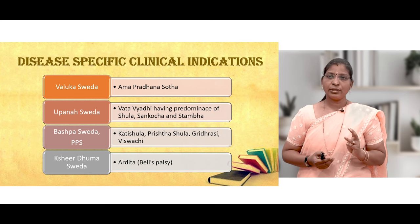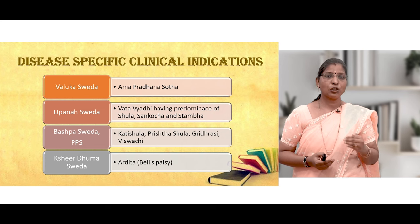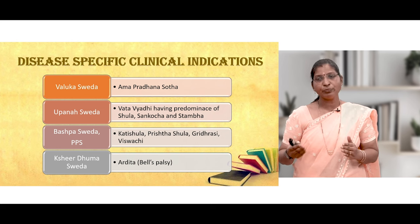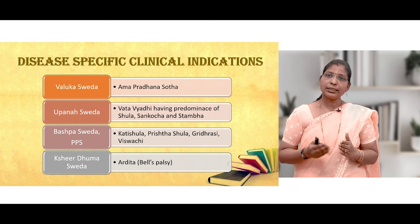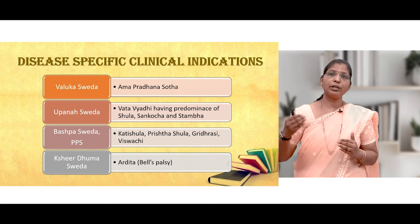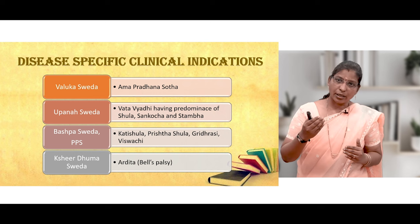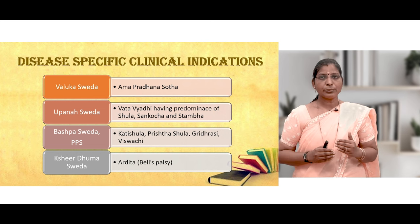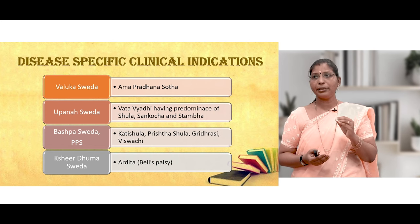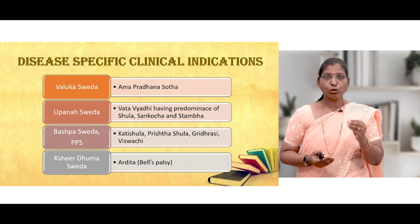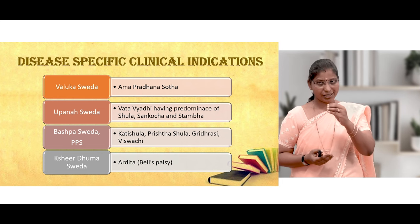For Bhashpa Sveda or Patrapinda Sveda: when there is Kati Sula, Prushta Sula, Ghridrasi, Vishwachi, or joint pain with predominantly pain from osteoarthritis or rheumatoid arthritis, Bhashpa Sveda is used. In Amavastha, Bhashpa Sveda is preferred; in Nirama Avastha, Patrapinda Sveda is preferred. The choice of leaves also depends on the Doshas involved.